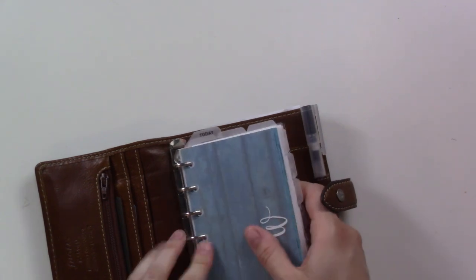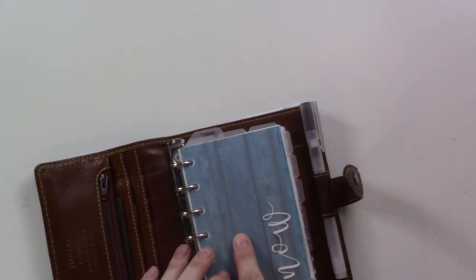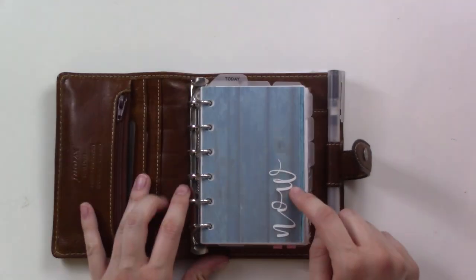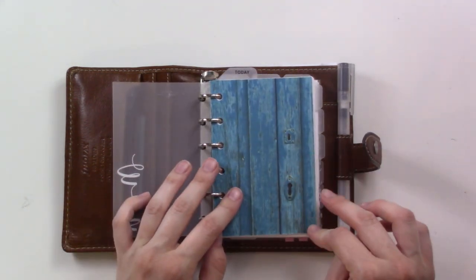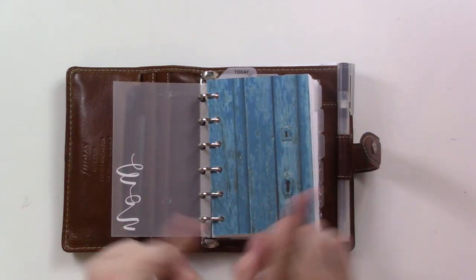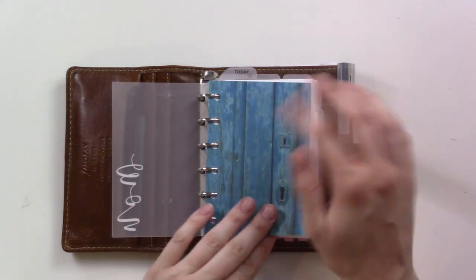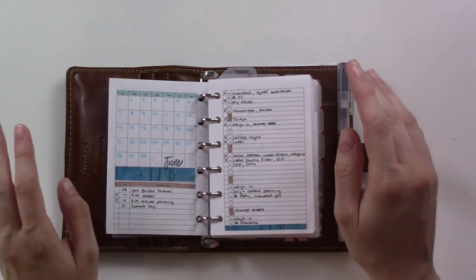These divider tabs, all these frosted divider tabs and this front cover page, are from Marlene's Plan to Create on Etsy. And then this is the monthly from - I did a whole plan with me video and I explained how I did the cover and the little stickers that match it and all of that.